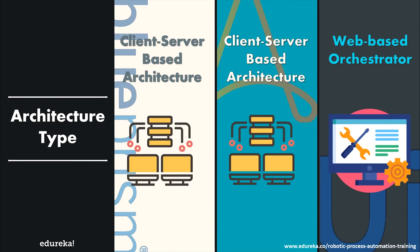Next, let us discuss the architecture type of all three tools. There are two types we will focus on: client-server based architecture and web-based orchestrator. In client-server architecture, multiple clients connect to a single server performing various tasks. A web-based orchestrator connects automated tasks into a cohesive workflow with permissions, oversight, and policy enforcement. Blue Prism and Automation Anywhere use client-server architecture, while UI Path offers a web-based orchestrator.